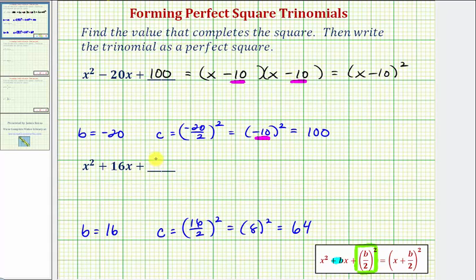By adding 64 here, we now have a perfect square trinomial, which we'll now factor. So we have x and x. The factors of 64 that add to 16 are eight and eight. So we have x plus eight times x plus eight, which equals the quantity x plus eight squared.